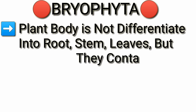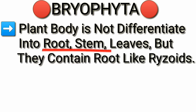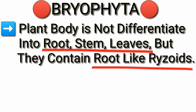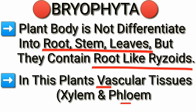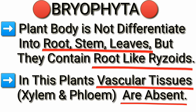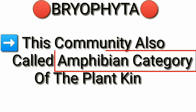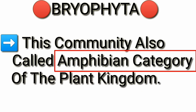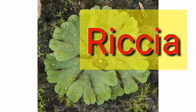Next is Bryophyta. In bryophytes, the plant body is not differentiated into root, stem, and leaves, but they contain rhizoids. Vascular tissues such as xylem and phloem are absent. This group is also called the amphibian category of the plant kingdom. An example of bryophyta is Riccia.